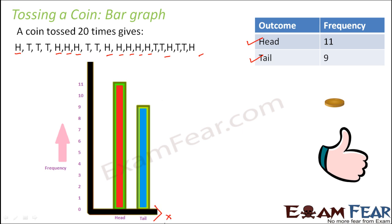On the x-axis you represent head and tail, and on the y-axis you represent the frequency. Head occurred 11 times and tail occurred 9 times. By looking at this bar graph, you can very easily say which outcome occurred more frequently. You can see that head occurred more frequently than tail in this particular experiment. But as such, anytime you toss a coin, the probability of getting a head and the probability of getting a tail will always remain the same.